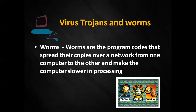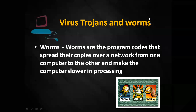The next is the worm. A worm is also a type of program and a type of virus. Worms are program codes that spread their copies over a network from one computer to another, making the computer slower in processing. A worm has the ability to copy and replicate itself and transmit from one computer to another. When multiple copies accumulate in the computer system, memory gets loaded and the computer starts to process slowly. So these are three different viruses: virus, trojan, and worm — all harmful programs for the computer.